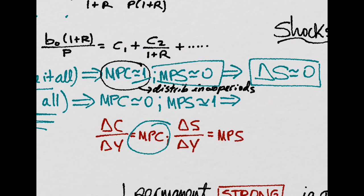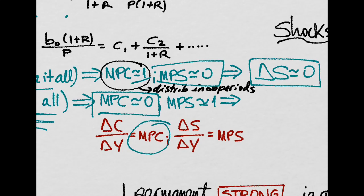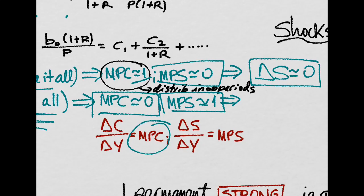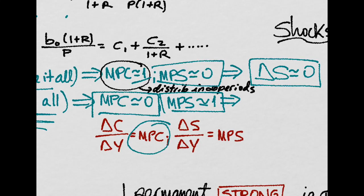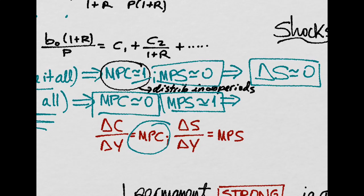If it's temporary, then your marginal propensity to consume is zero and you save it all. Your marginal propensity to save is almost equal to one. That is, you save all the increase in income because it's temporary.